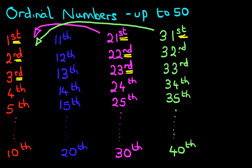In fact, we'll underline it just to highlight it. We've got 31st, 32nd, 33rd. All the rest end with a TH. 34th, 35th.